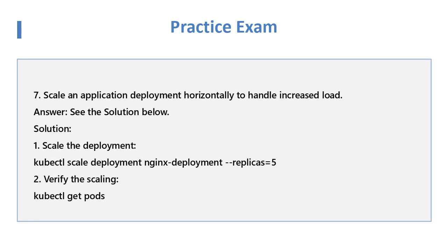Question 7: Scale an application deployment horizontally to handle increased load. Solution: Scale the deployment using 'kubectl scale deployment nginx-deployment --replicas=5'. Verify the scaling with 'kubectl get pods' to confirm all five replicas are running.